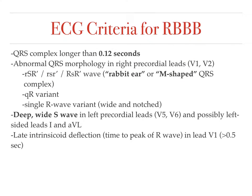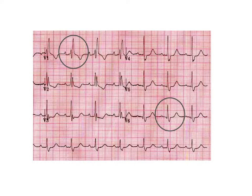Here are the EKG criteria for right bundle branch block. The QRS wave needs to be greater than 0.12 seconds. In leads V1 and V2, you want to see that rabbit ear or M-shaped QRS complex. Then you want to see a nice deep wide S wave in the left precordial leads V5 and V6.